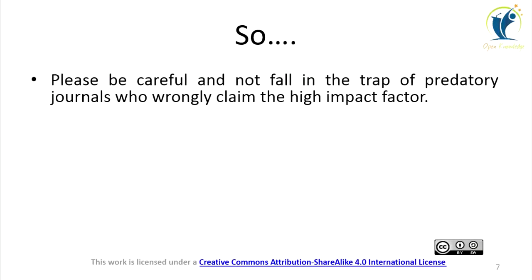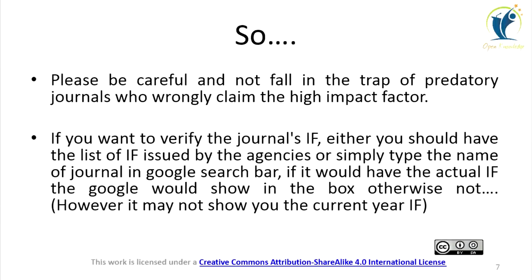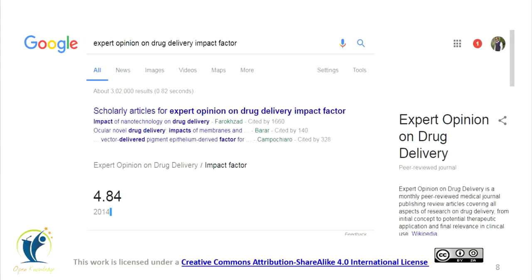Please be careful and do not fall into the trap of predatory journals that wrongly claim a high impact factor. If you want to verify a journal's impact factor, either obtain the list issued by the recognized agencies, or simply type the name of the journal in the Google search bar — if it has an actual impact factor, Google will show it in a box. However, it may not show the current impact factor. As shown in this slide, when the journal name is typed, Google shows the impact factor 4.84 in the box for 2014.